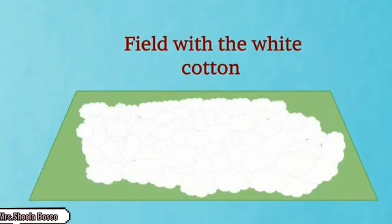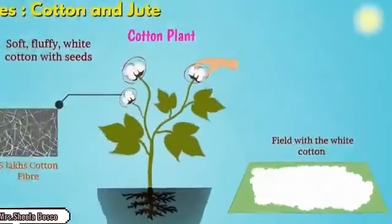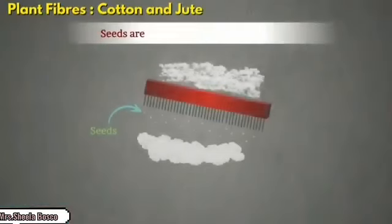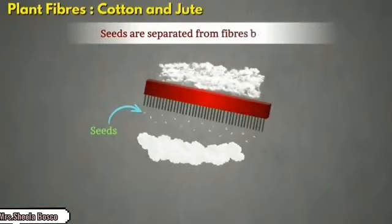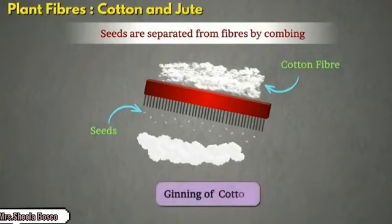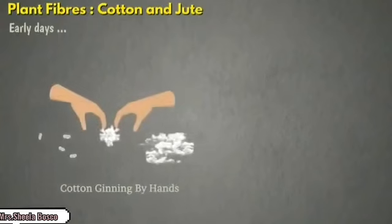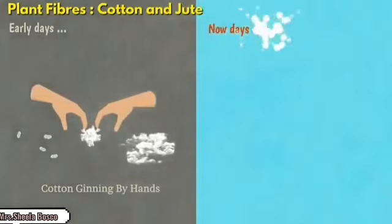Then they take the cotton by hand and collect the cotton alone. The collected cotton will have seeds. These seeds are removed by combing — just like how we comb our hair. That process is called ginning. Early days it was done by hand, but nowadays we have ginning machines.